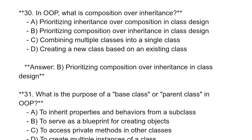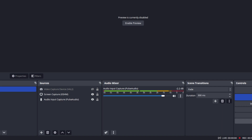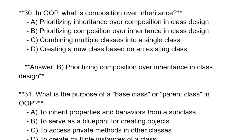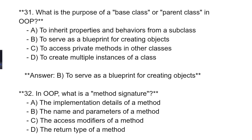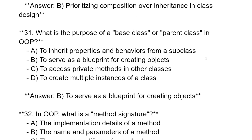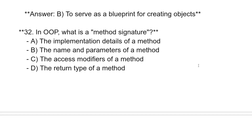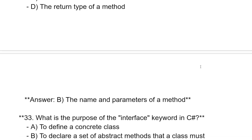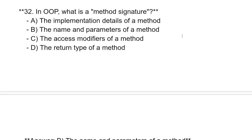In OOP, what is composition over inheritance? Prioritize composition over inheritance in class design. What is the purpose of the base class or parent class in OOP? To serve as a blueprint for creating objects. What is the method signature in OOP? The name and parameters of the method.